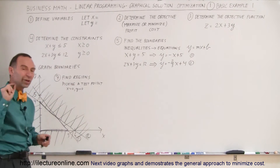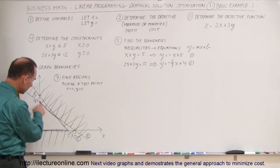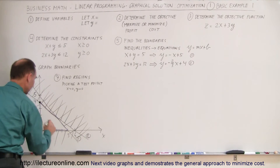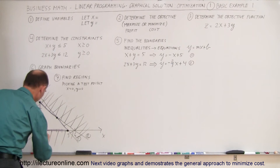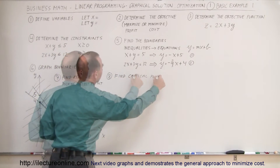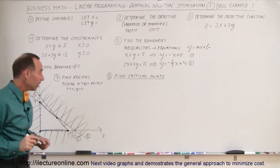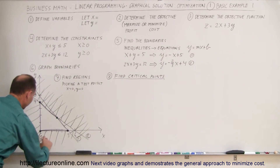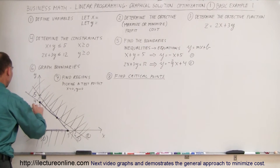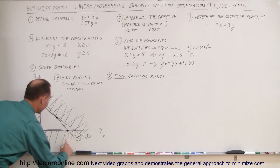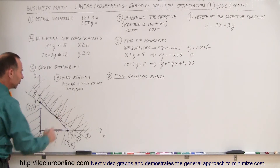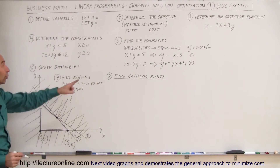Step eight is to find the critical points — wherever two lines cross. There are four critical points on the boundary of the region: the origin (0, 0), the point (0, 4) where line 1 meets the y-axis, the point (5, 0) where line 1 meets the x-axis, and the intersection of the two boundary lines. Three of the four points are easy to read directly from the graph; the fourth requires solving the two equations simultaneously.